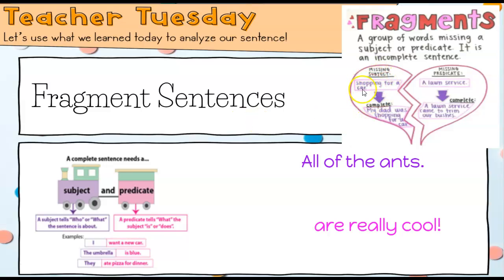For example, shopping for a car. Okay, that's missing the subject. Who's shopping for the car? If I were to make it complete it would say, my dad was shopping for a car. So this sentence was missing the subject, who it was about.